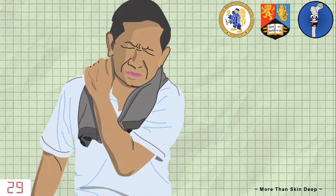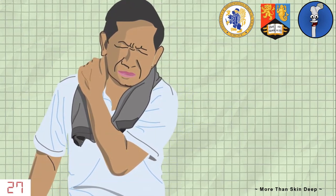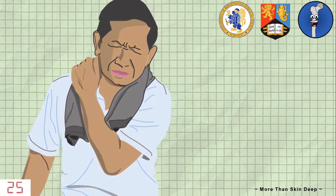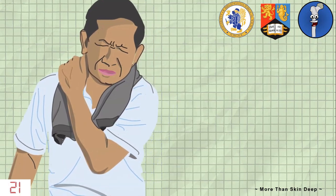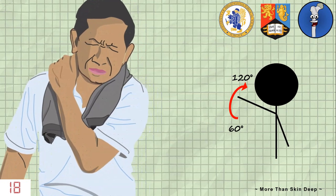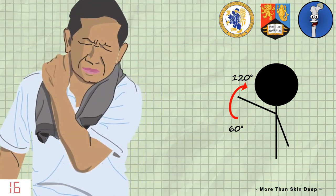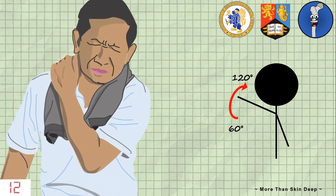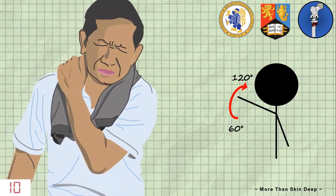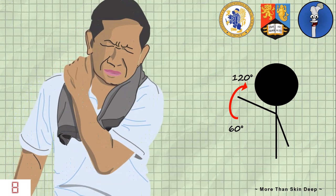Specifically the pain was worse when he abducted his shoulder between 60 and 120 degrees. This is a classic finding and is typical of a condition known as supraspinatus tendonitis or painful arc syndrome. It occurs due to inflammation of the supraspinatus tendon as it passes under the acromion. It tends to occur due to overuse, for example in Mr. Okada's sailing.